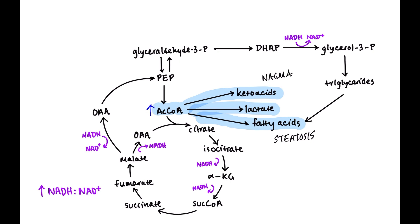Another consequence of high NADH is that we have a hard time converting malate to oxaloacetate. Converting malate to oxaloacetate is one of the really important steps in gluconeogenesis — malate goes to oxaloacetate, and oxaloacetate goes to phosphoenolpyruvate via the enzyme PEPCK. This step slows down, meaning gluconeogenesis is impaired, resulting in fasting hypoglycemia with heavy alcohol use.